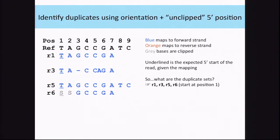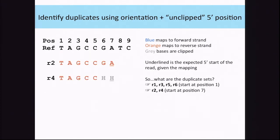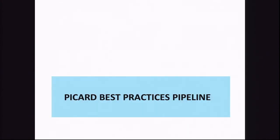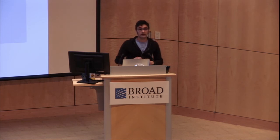Working through the example, one set of duplicates according to this algorithm is reads one, three, five, and six. They're all duplicates because they have the same five-prime start coordinate. Read six has some clipping but once you extrapolate based on the clipping, we deduce it started at the same position as the others — position one. Reads two and four are another duplicate set; they're on the reverse strand, and when you account for that, the start is actually the last base, position seven. Read seven is all by itself. Mark duplicates is a very subtle algorithm — there's more documentation on the Picard website.